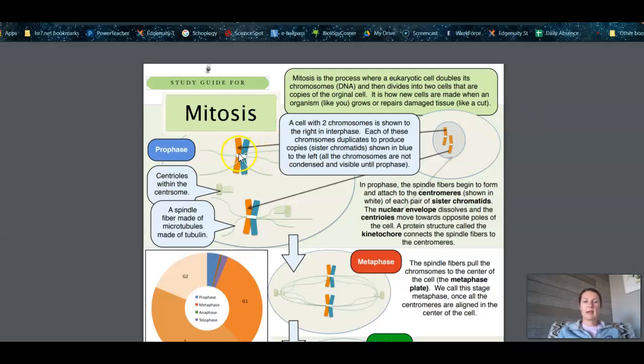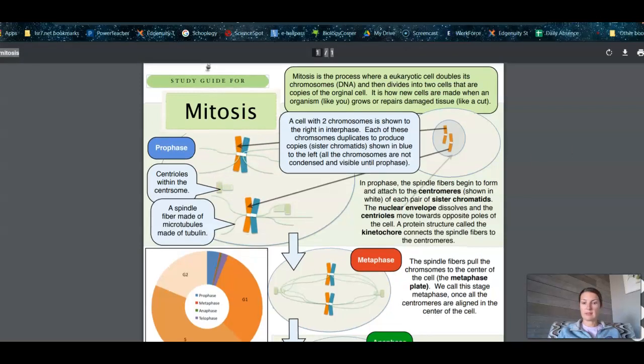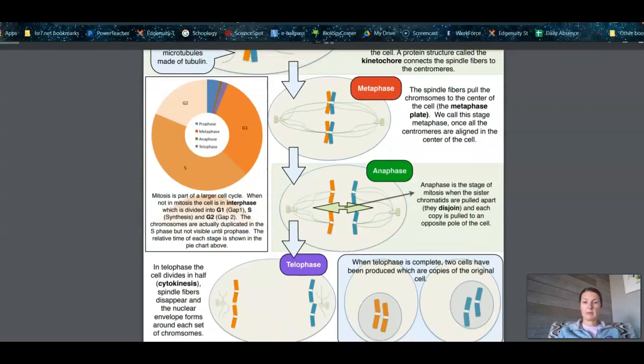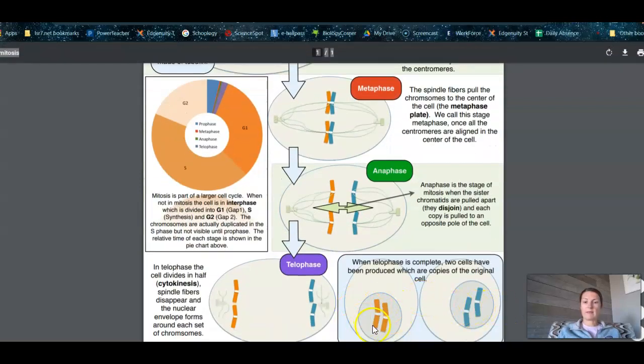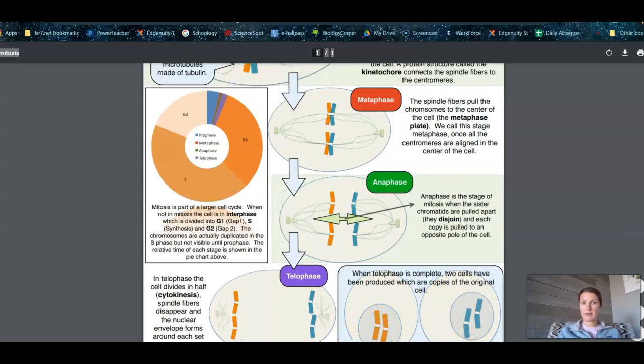So in this, they have this orange chromosome and then this blue one, and those are identical, and then they're going to split to opposite sides of the cell. And eventually we will have two cells. We have the orange and the blue here. They're identical, but to show the picture, they did them in different colors.